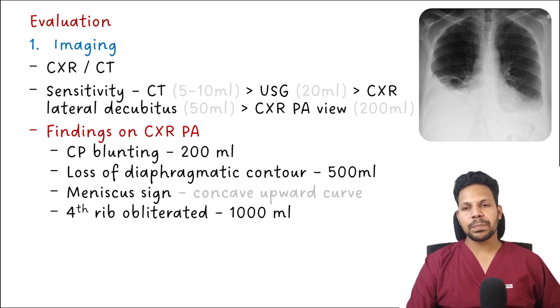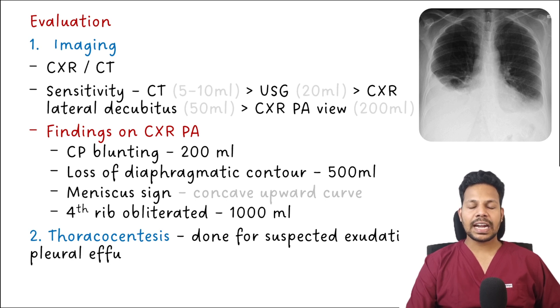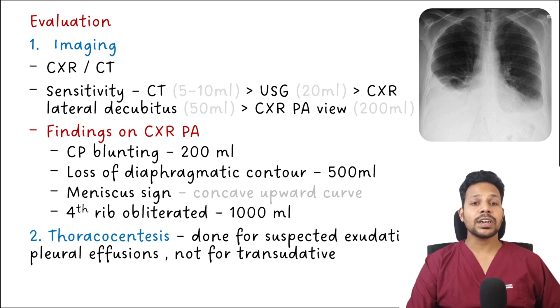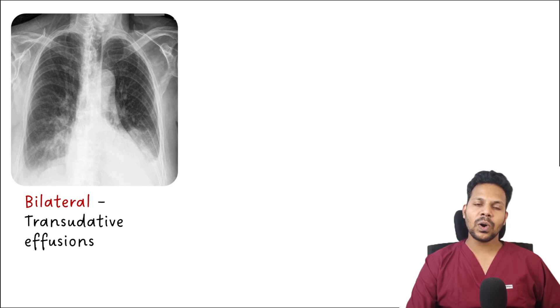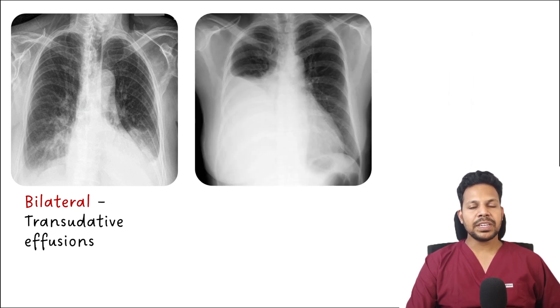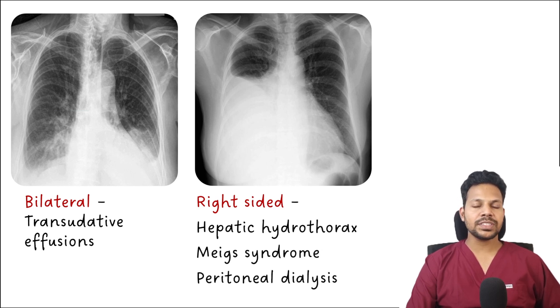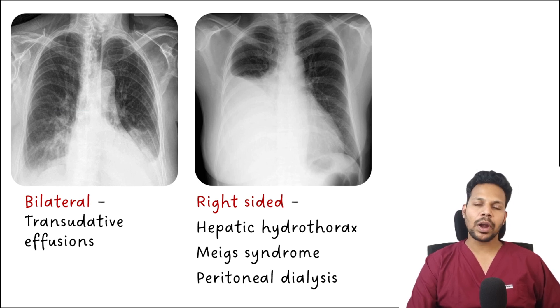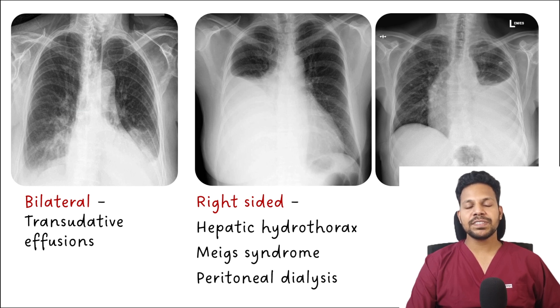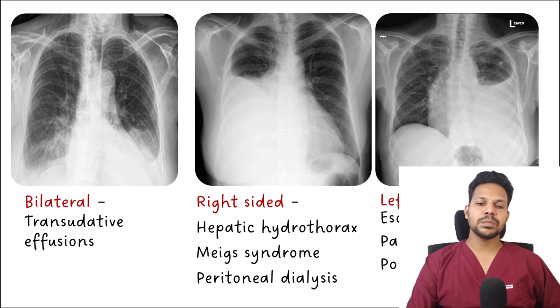After identifying pleural effusion, the next step is thoracentesis, which should be done only when an exudative effusion is suspected — treating the cause is sufficient for transudative effusion. Bilateral pleural effusion with CP angle blunting on both sides suggests transudative causes. Right-sided pleural effusion is characteristic of hepatic hydrothorax, Meig's syndrome, and peritoneal dialysis, because there are more diaphragmatic defects on the right side allowing fluid movement from the abdominal cavity. Left-sided pleural effusion is associated with esophageal rupture, pancreatitis, post-CABG, and Dressler syndrome.